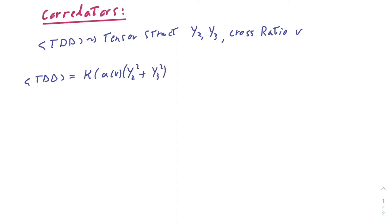This correlation function is given by one overall kinematic factor which are just some power laws, two functions in a cross-ratio, and some tensor structure.